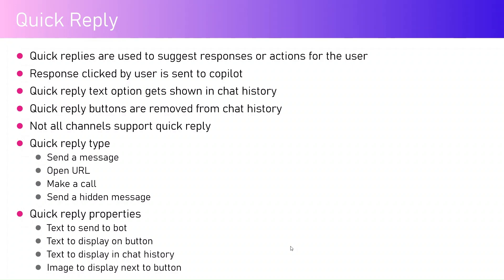The purpose of quick reply is basically to show predefined responses to the user so they can select from them. Quick replies are used to suggest responses or actions. The response clicked by the user is sent to the copilot, and the quick reply text gets shown in the chat history. However, quick reply buttons are removed from the chat history — only the text passes through, not the buttons.